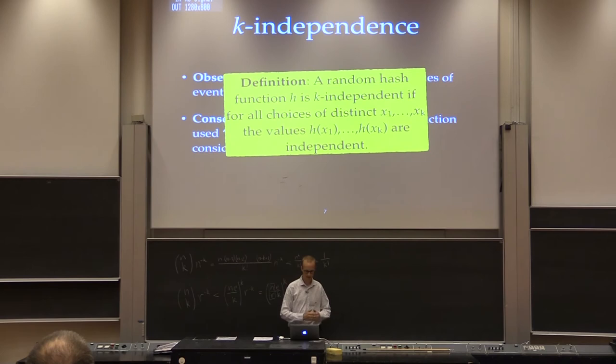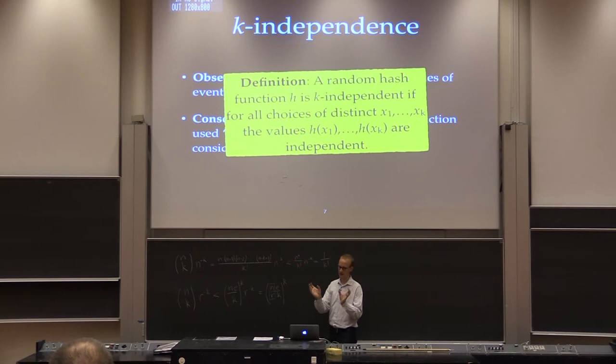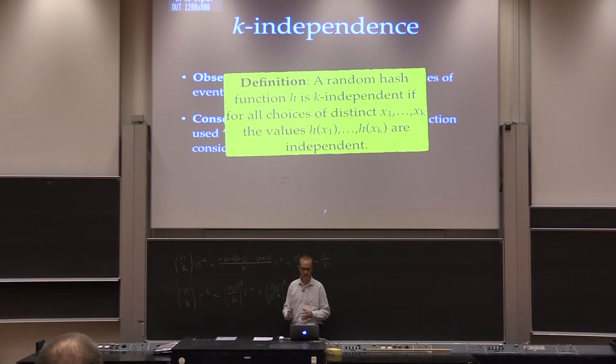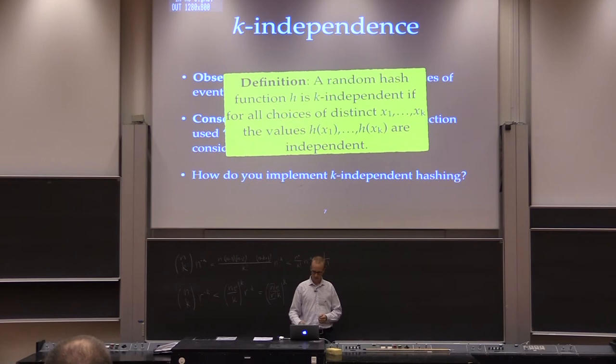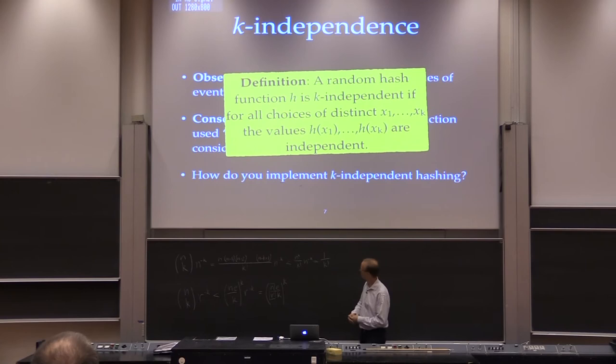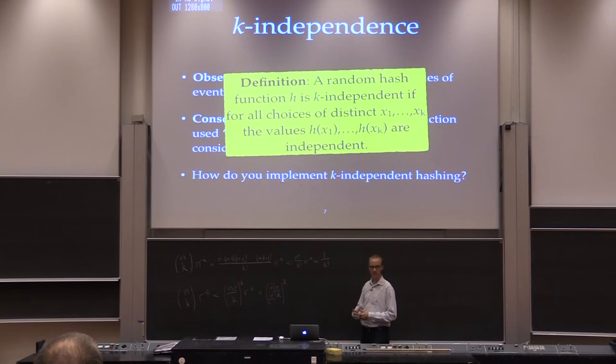A random hash function is k-independent if, whenever you look at k inputs, the outputs are independent. Usually it's also understood that they are uniform or very close to uniform over some range. In particular, the two analyses I showed work if we have k-independence. I wanted k to be roughly logarithmic, so we are interested in implementing k-independence in general and, in particular, log n-wise independence to get these kinds of results.